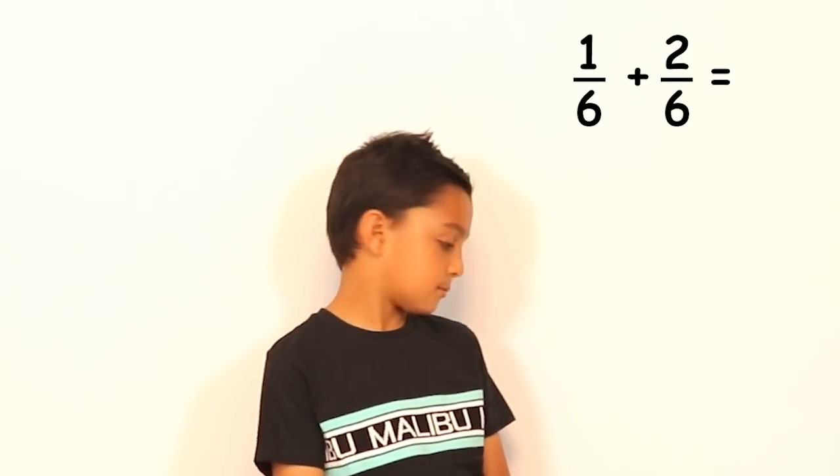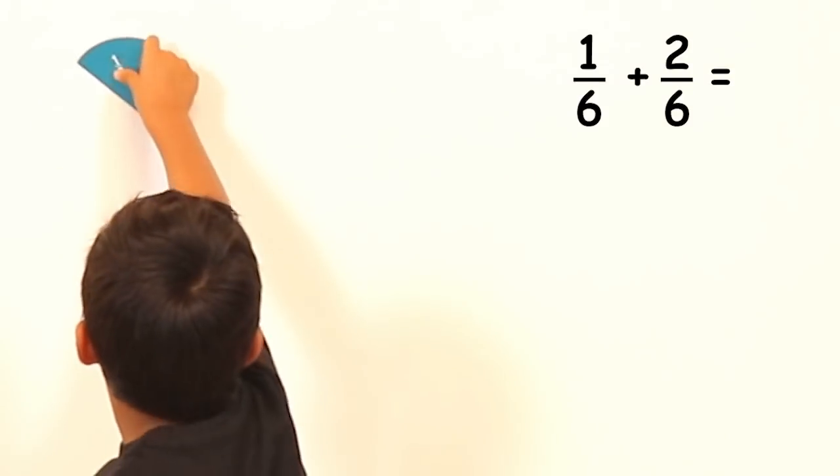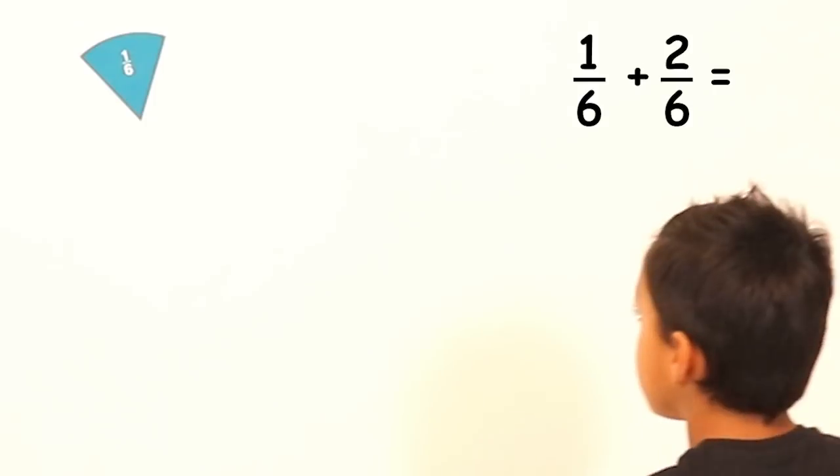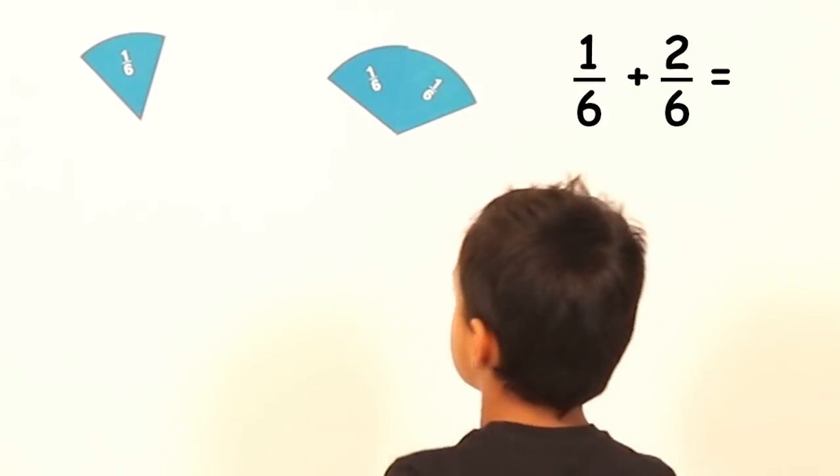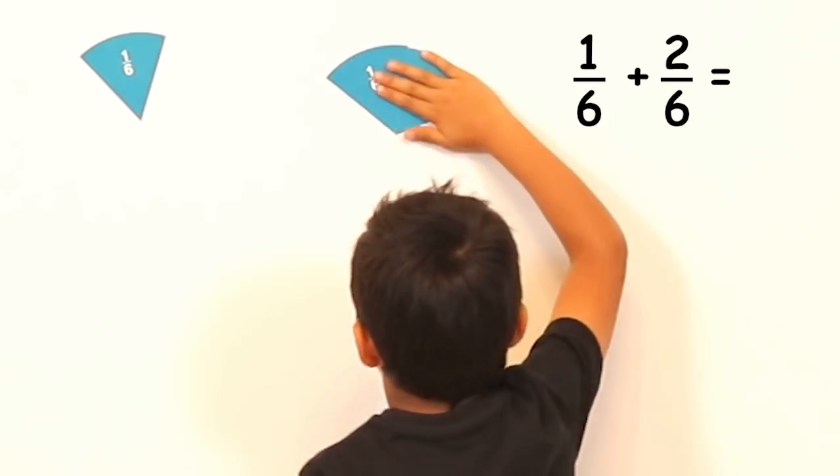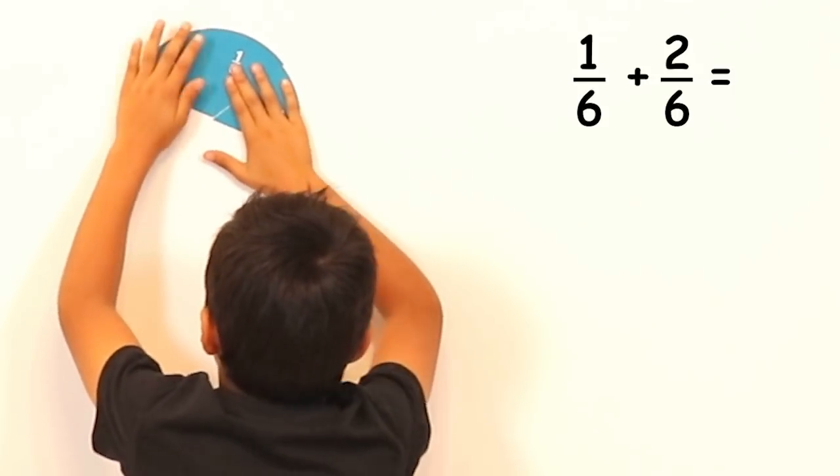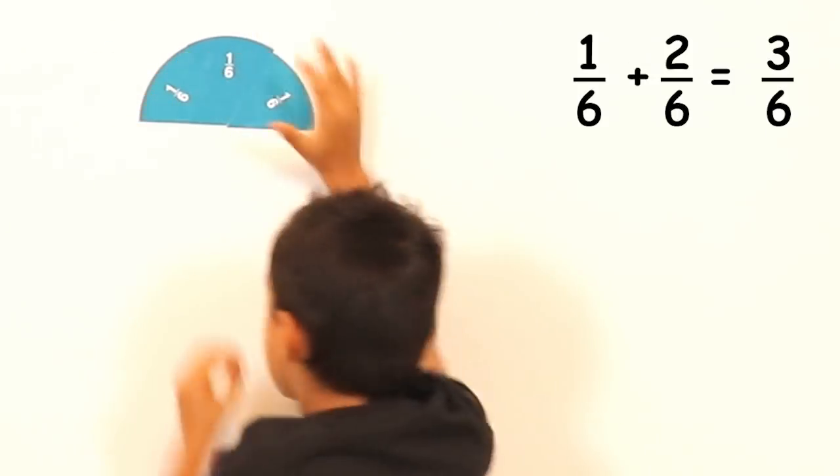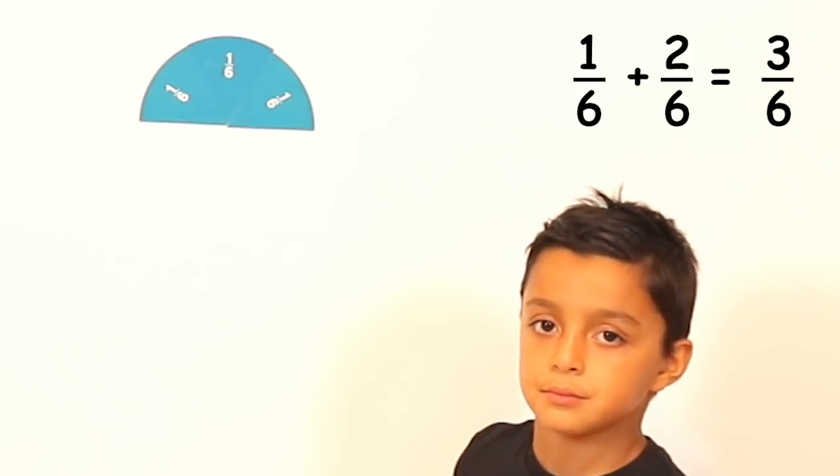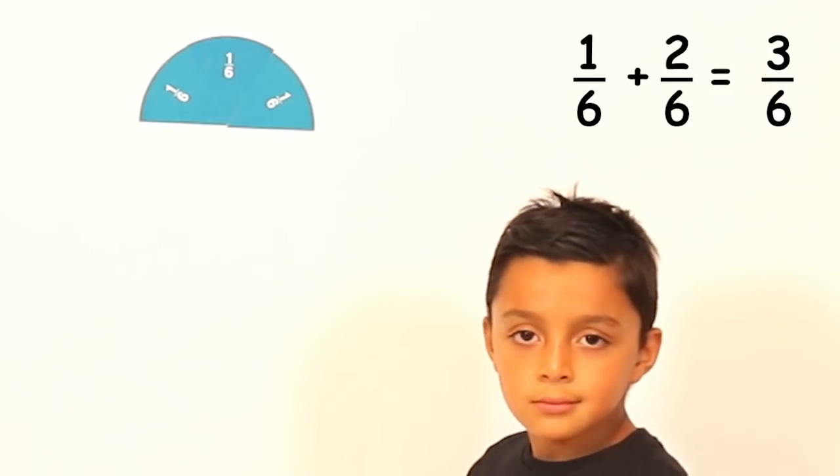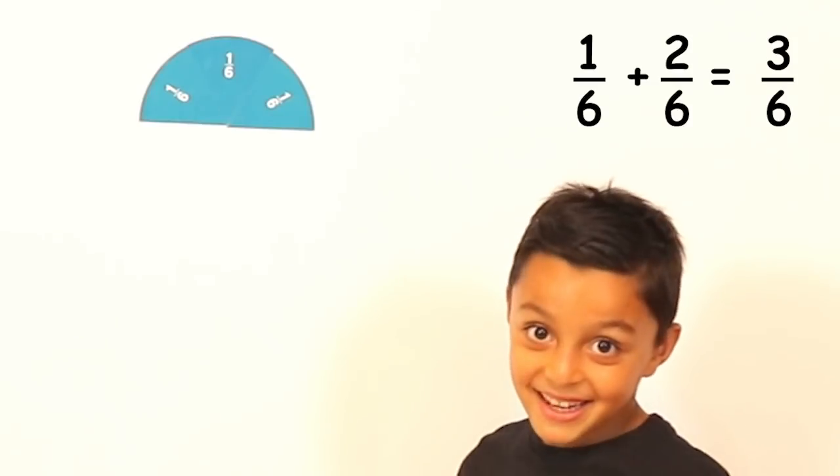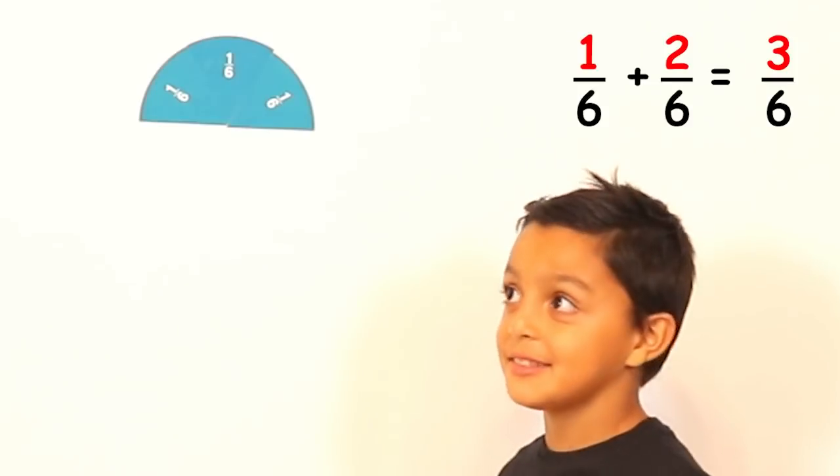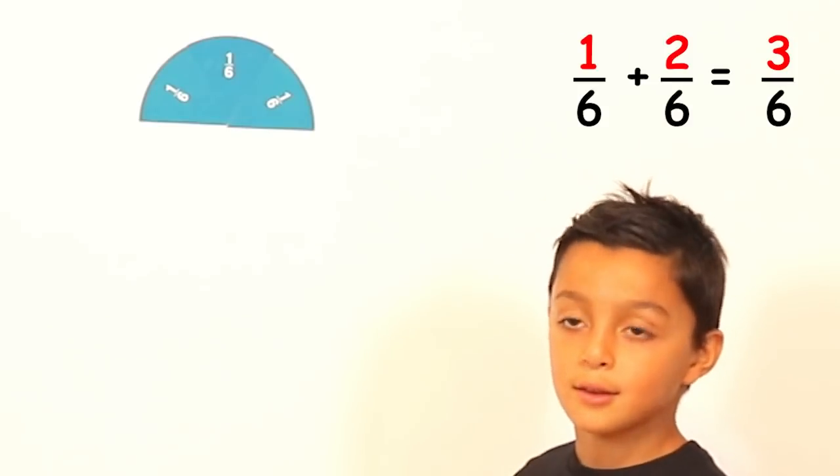Very good. What is one sixth plus two sixths? So we have one sixth plus two sixths. Okay and what happens if we add them together? It becomes three sixths. Three sixths. Very good. So what did you do with the parts? So you had one out of six parts and you were adding it to two out of six parts. So what did you do with those numbers? I added them together. What did you add together? Two and one. One and two. So you've got three sixths.